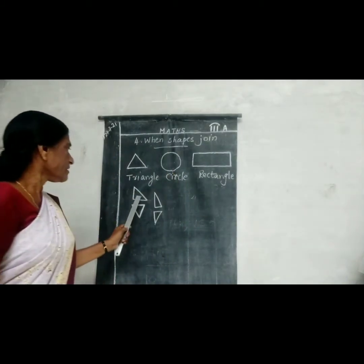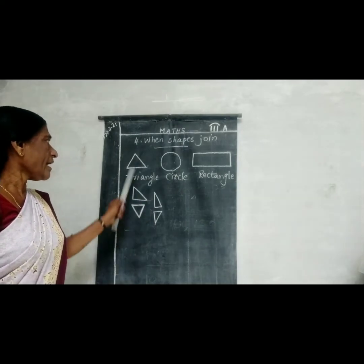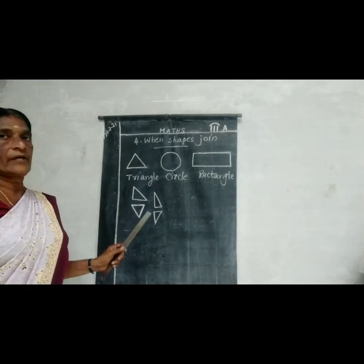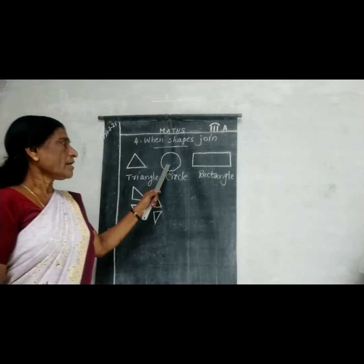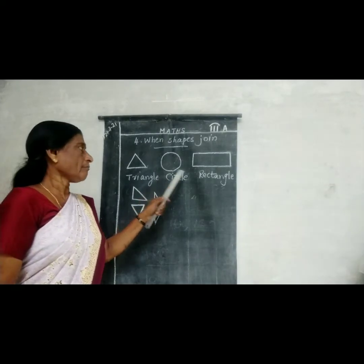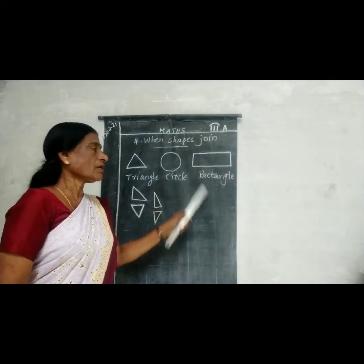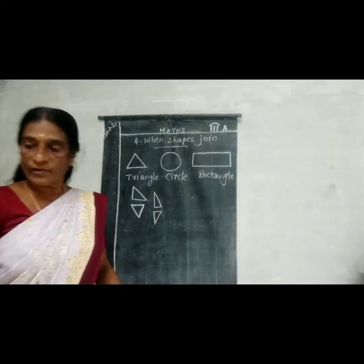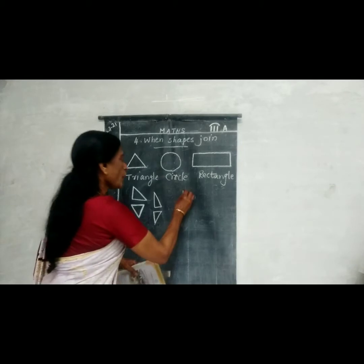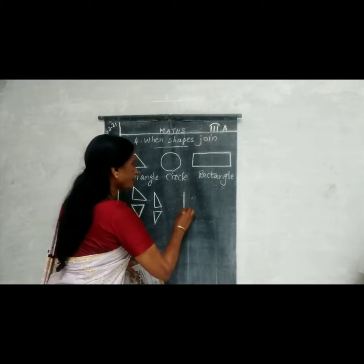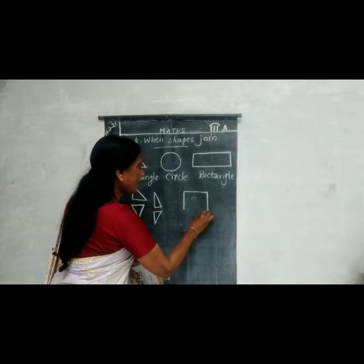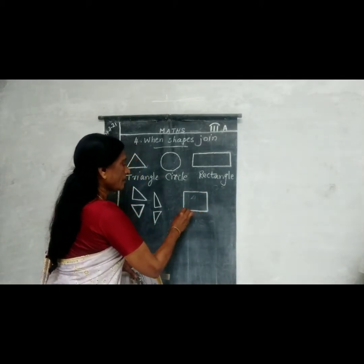These are also triangles. A triangle has three sides. This is a rectangle. This is a rectangle. Square.